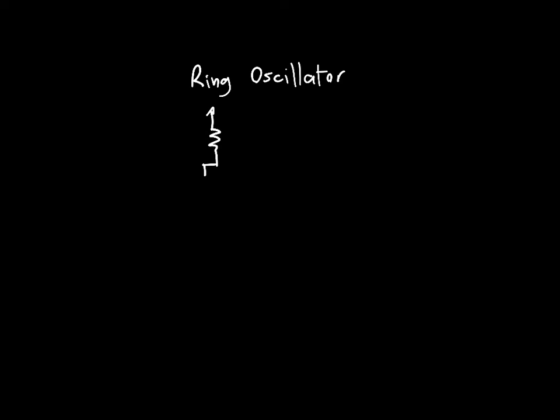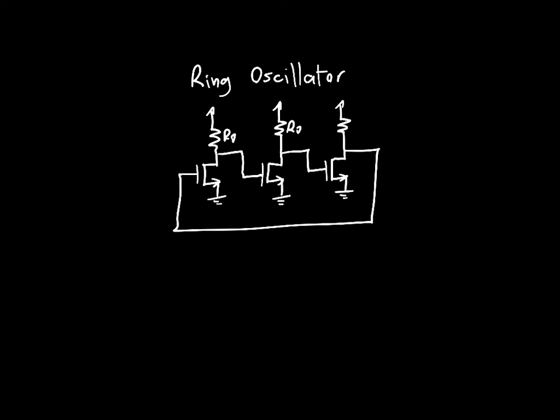So we said if we have a few of these common source amplifiers cascaded together with certain resistances Rd, and they're just cascaded together, and we want to analyze the poles of the system, we can from that analysis determine when the circuit will oscillate and at what frequency.